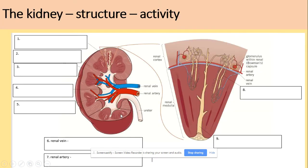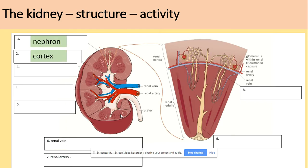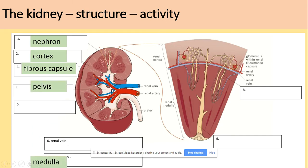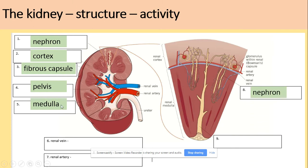This is the structure of the kidney. As per the specification, we don't need to know it all, but what's really important is the nephron — a single unit — and the cortex, which is the light layer. Around it we've got the fibrous capsule, and inside we've got the pelvis. Those pyramid-looking structures are called the medulla. So what's important for us is the nephron, cortex, and medulla.